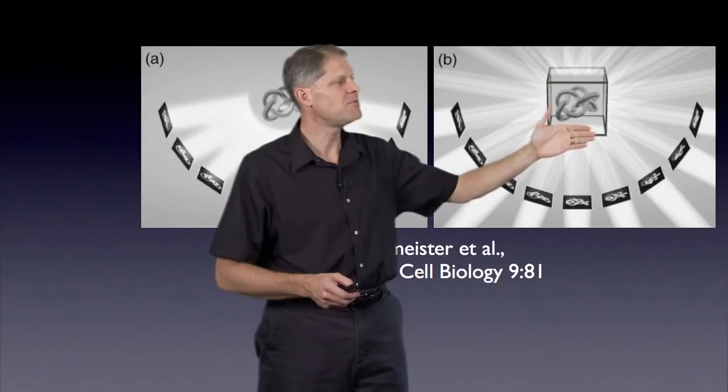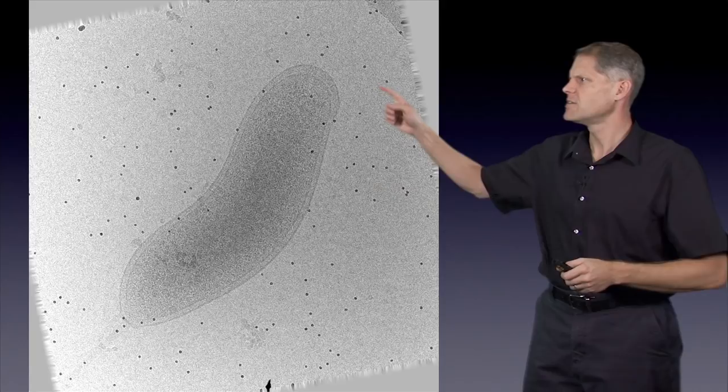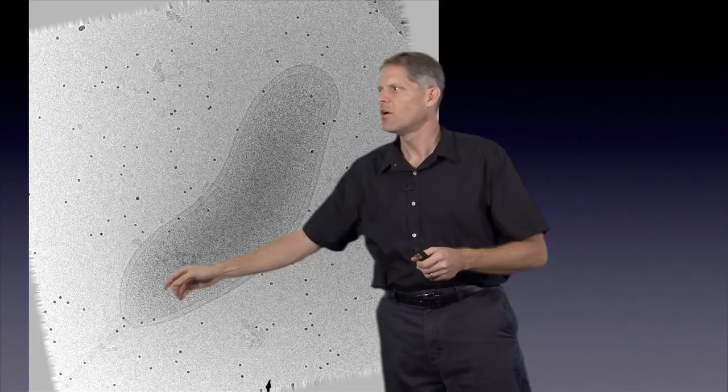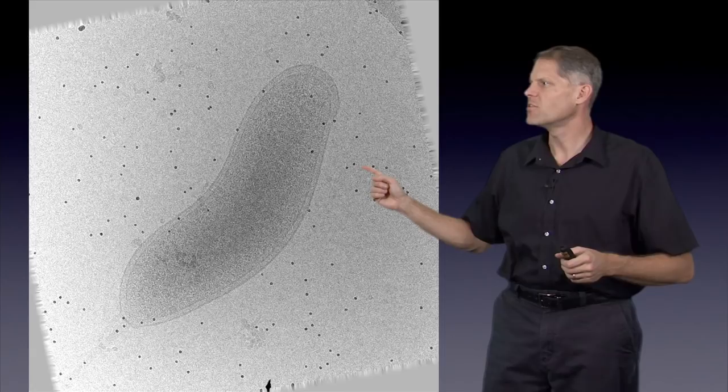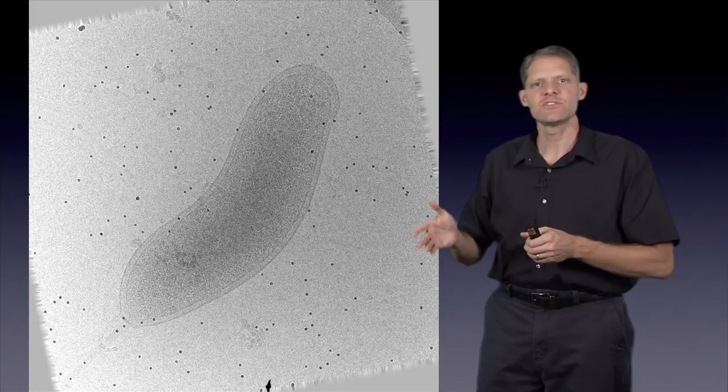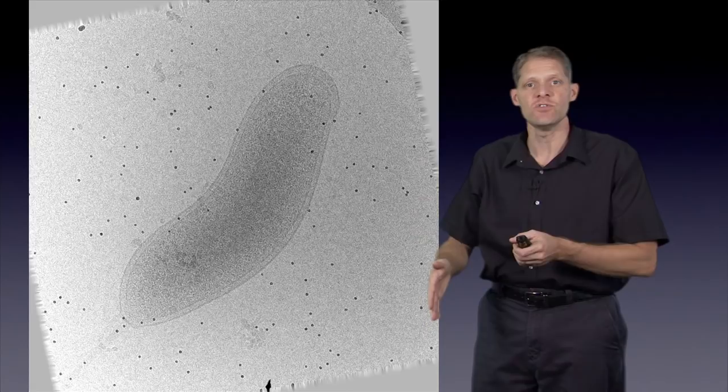As an example, this is a picture of a bacterial cell, plunge frozen in vitreous ice over an EM grid. The black dots you see all around are gold fiducial markers, usually 10 nanometers in diameter, that were added into the solution with the bacterial cells before plunge freezing into liquid ethane. These gold fiducials act as markers to help us align the images afterwards.